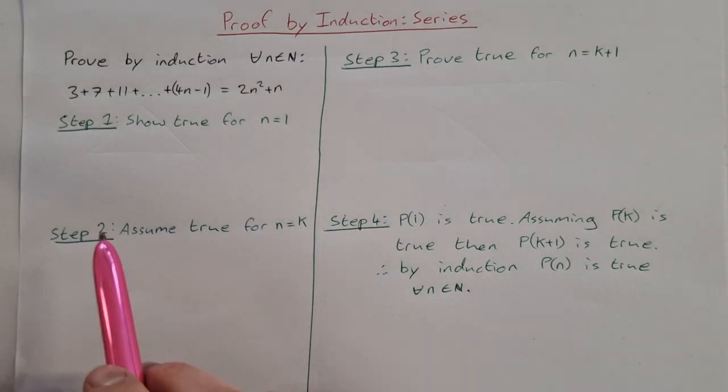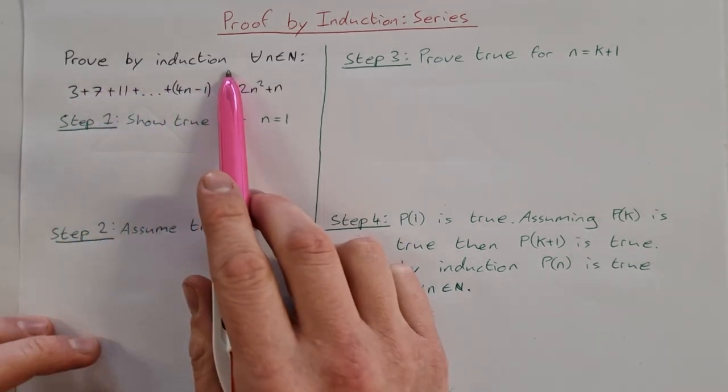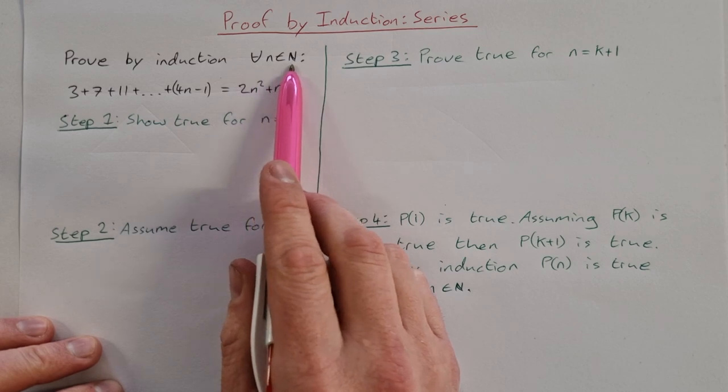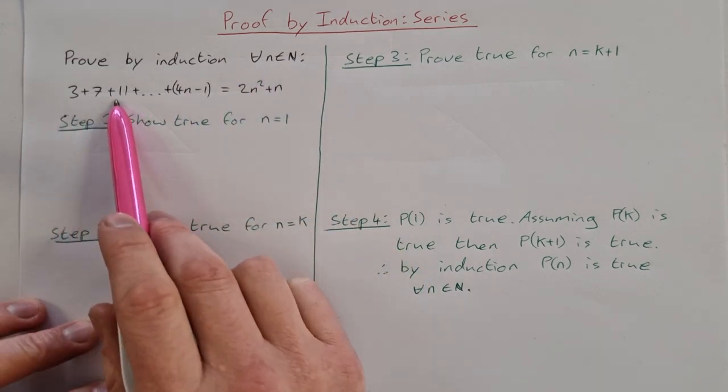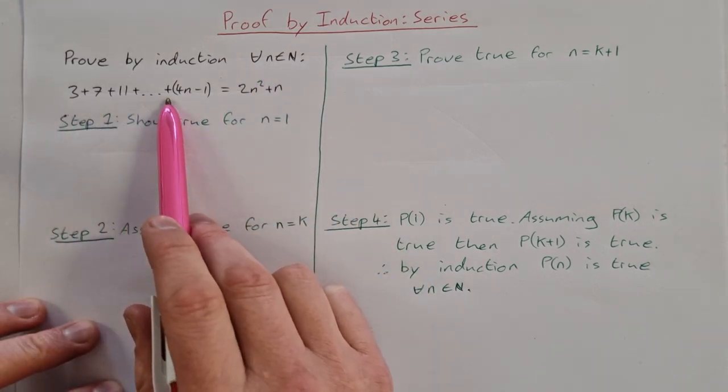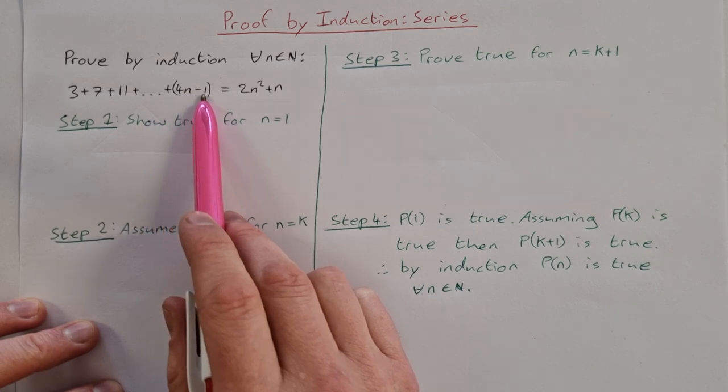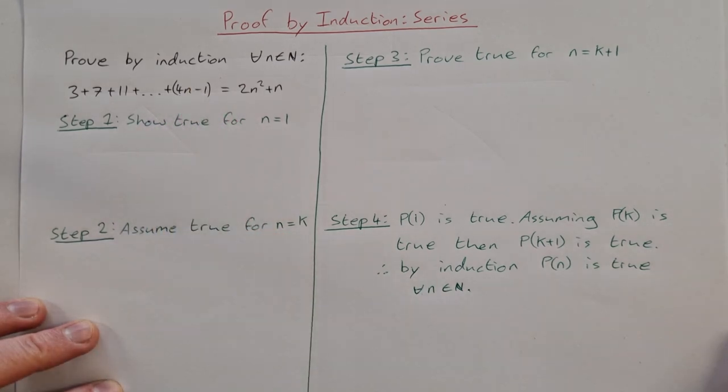What I'm asked to do is prove by induction for all n element of N that 3 plus 7 plus 11 plus all the way up to 4n minus 1 is equal to 2n squared plus n.